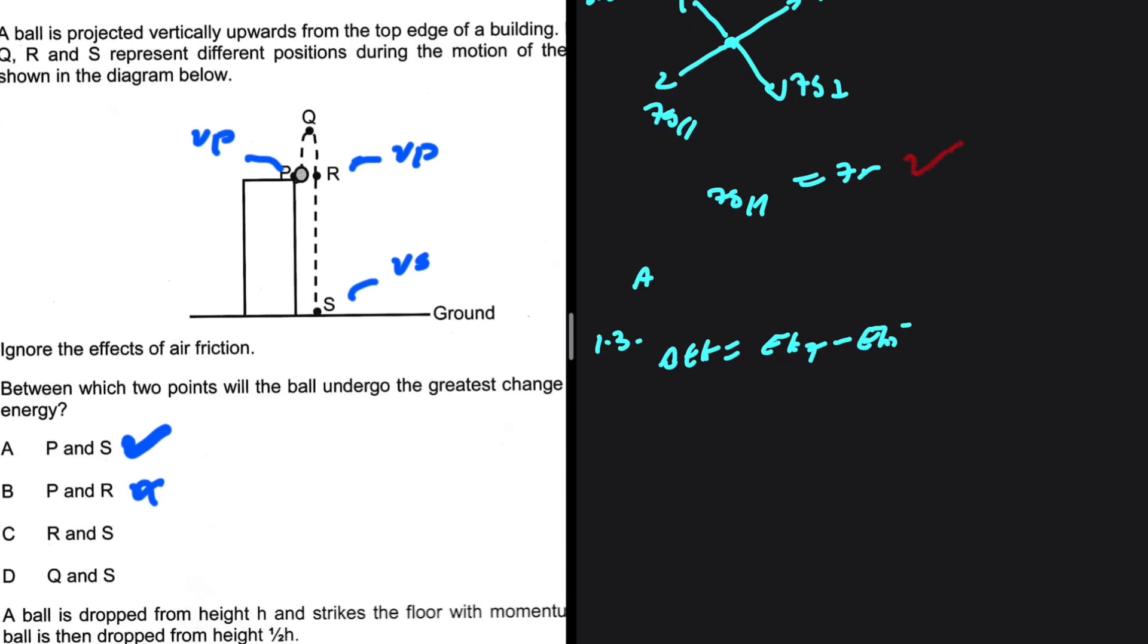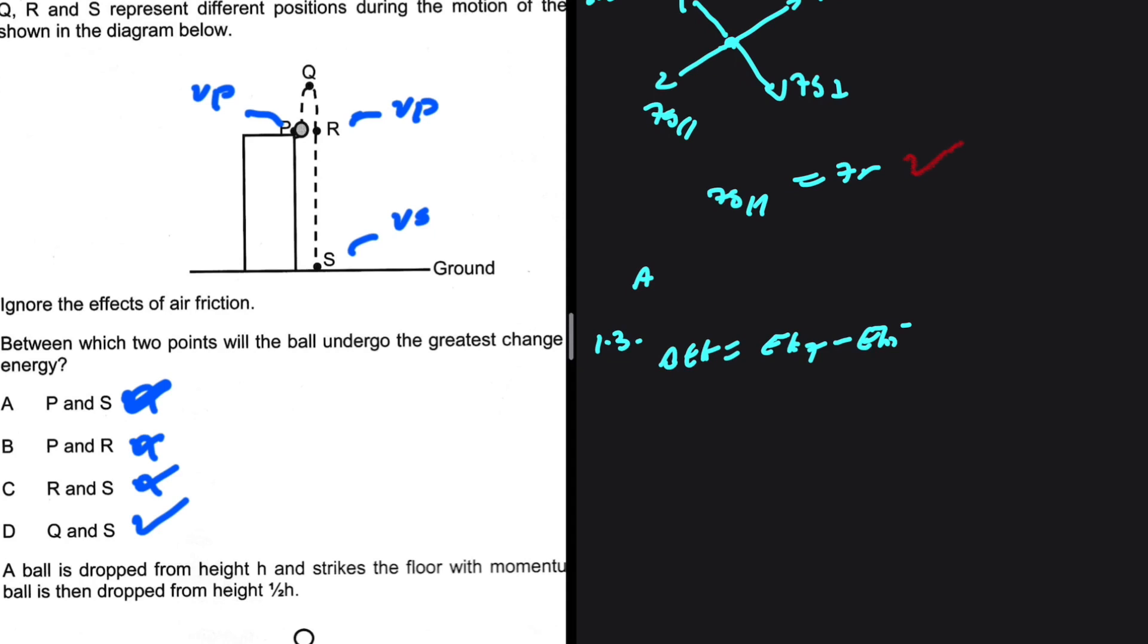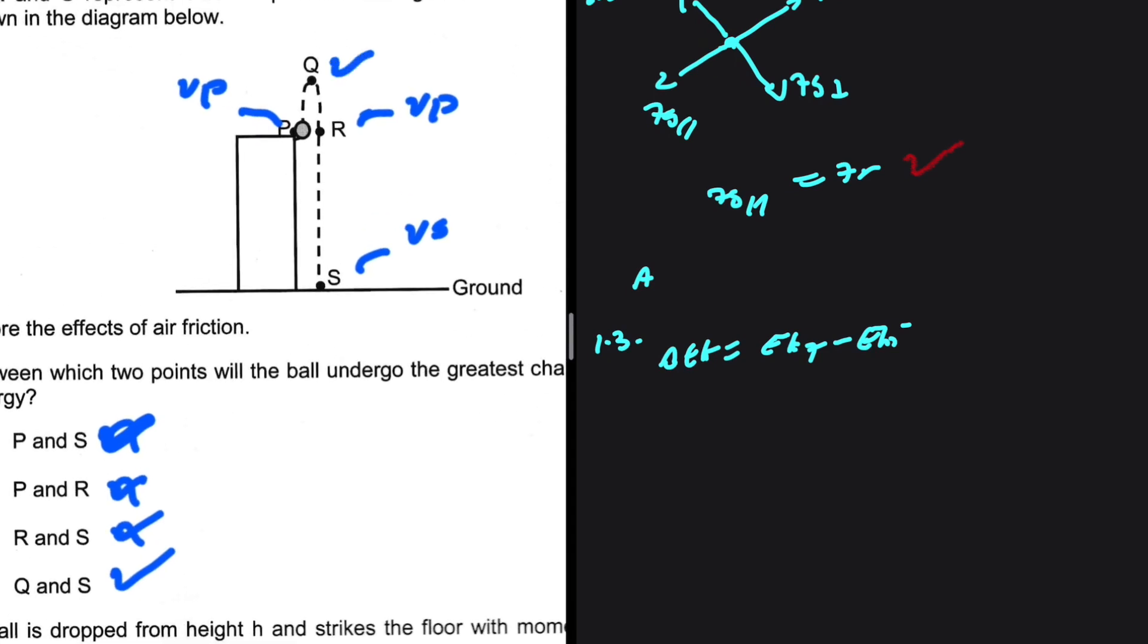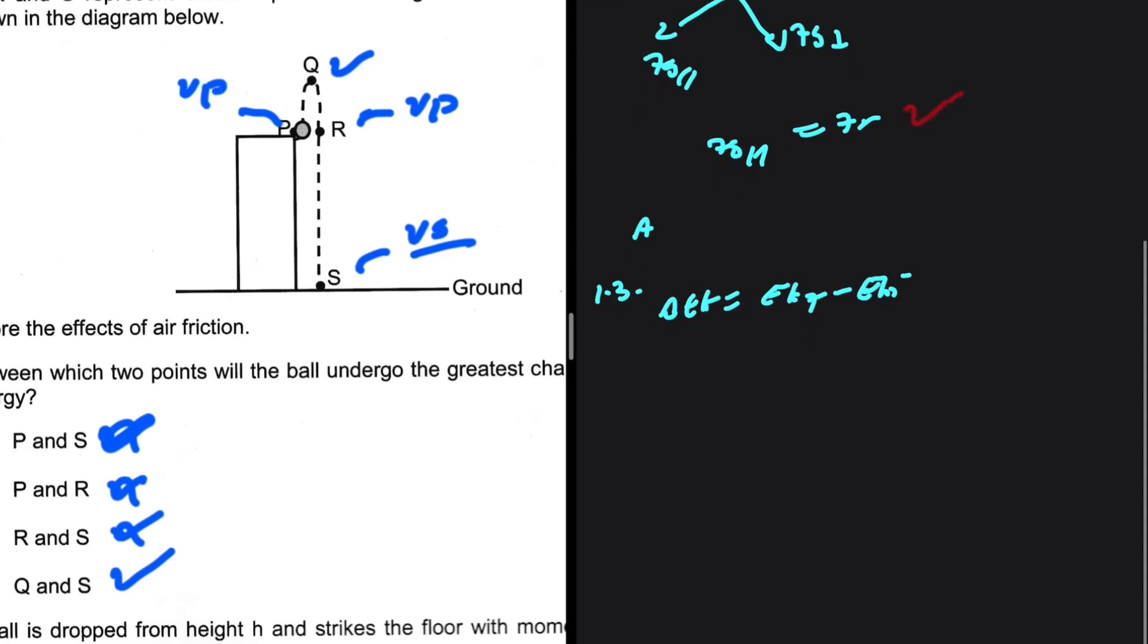Let's move to R and S. The change in kinetic energy between P and S is the same as the change in kinetic energy between R and S, because vp, the velocity at P, is equal to the velocity at R. So A and C cannot be the correct answers at the same time. Clearly they all have to be wrong. The correct answer is actually D, but we can justify why D is the correct answer. At Q, that is the maximum height, so the kinetic energy at Q is zero. But at S we have some vs, so vs minus zero will be greater than vs minus vp. That makes sense. So the answer to 1.3 is actually D.